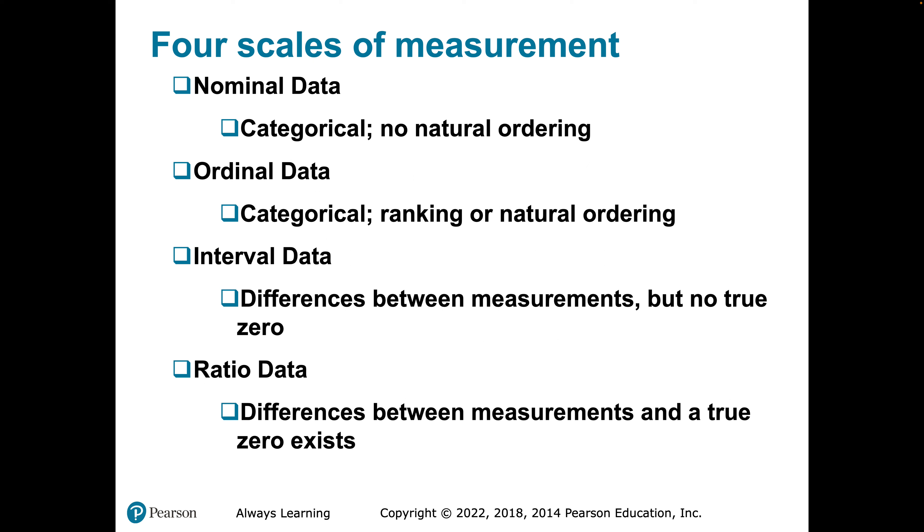Ordinal data is a categorical variable that has a natural ordering. An example of ordinal data may be academic classification — freshman, sophomore, junior, senior — because of the obvious ranking tied to the number of credits completed. Military rank would also be something that's categorical but has a natural ordering.